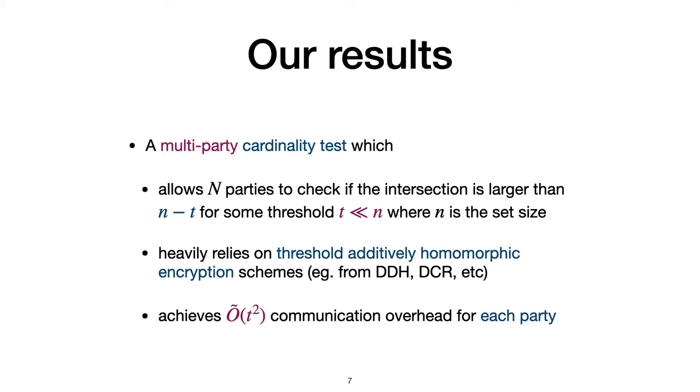Now I show our main results. Our main result is a multi-party cardinality test, which allows M parties to check if its intersection is larger than N minus T for some threshold T. Here, big N is a number of parties, small n is a set size, and T is substantially smaller than N and small n. Our approach only requires threshold additively homomorphic encryption instead of a fully homomorphic one. Thus, we only rely on weaker assumptions such as DDH or DCR.